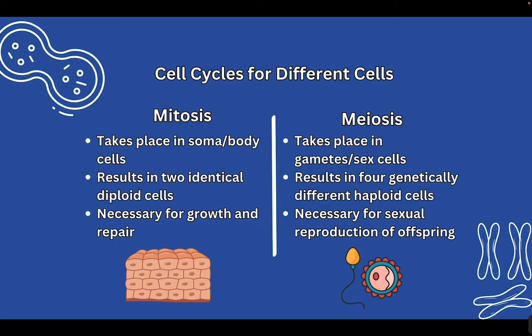Meiosis also happens after interphase, but is specific to sex cells, which we call gametes — we have the sperm and the ovum, or the egg. This process results in four genetically different haploid cells. At the end of meiosis, we do not want cells to look the same, while in mitosis we do. Meiosis is necessary for sexual reproduction to create offspring. Any organism that sexually reproduces needs to go through meiosis.